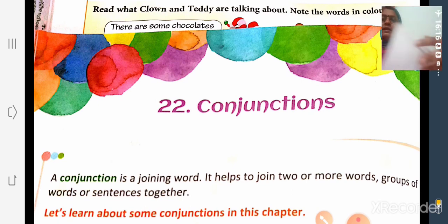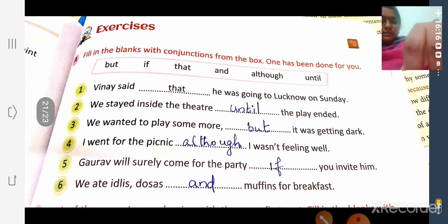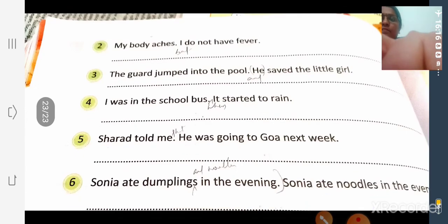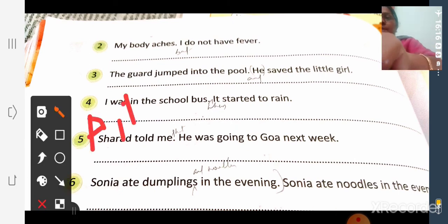Then conjunctions, joining words: and, but, or, so, because, when, etc. Conjunctions in that lesson, exercise A, B, and C. Exercise A, B, and C.